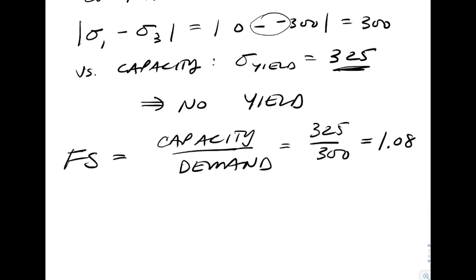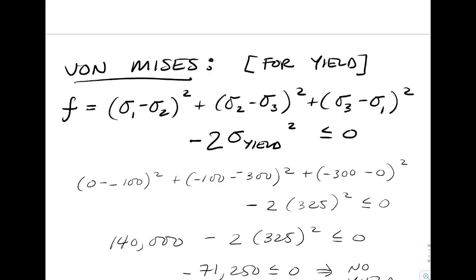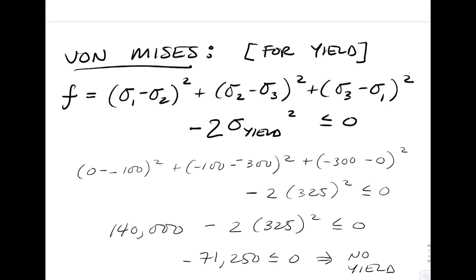The equation for the von Mises yield criteria, if the function exceeds 0, then we have yielding. Looking at the plug of the number, sigma 1 is 0, so that goes away. See the 0 below.